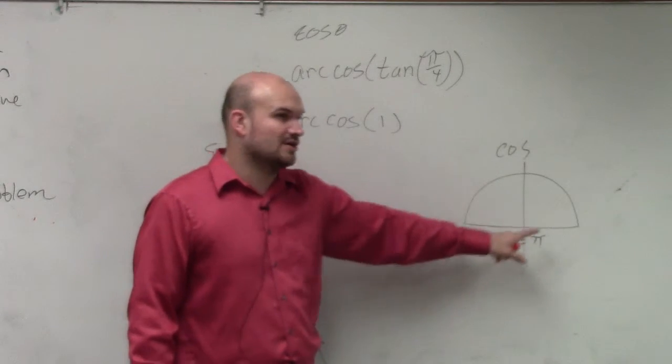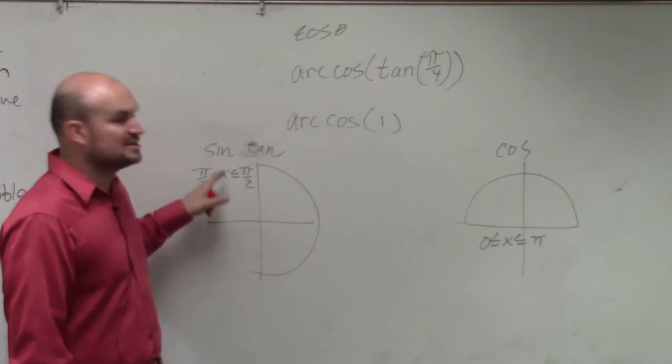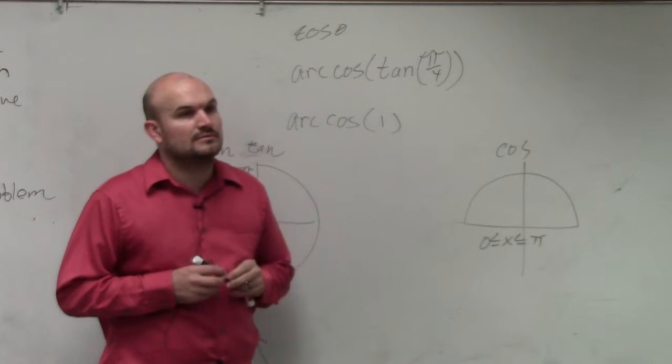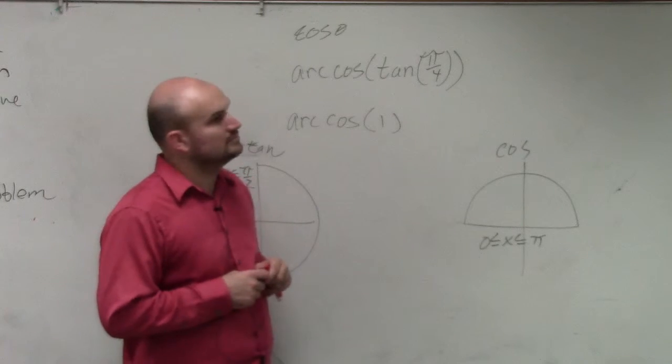Cosine has the constraint of 0 and π. Tangent is the constraint of negative π halves and π halves. Yes? Yes? I don't think it's going to be the right point. OK.